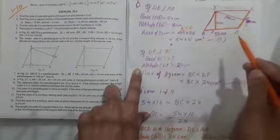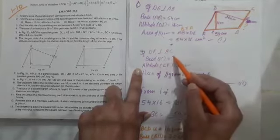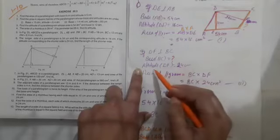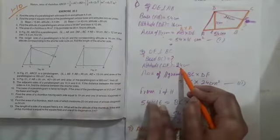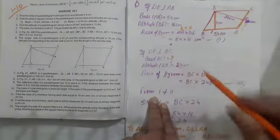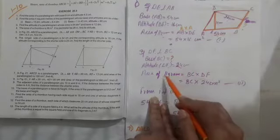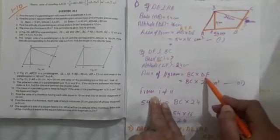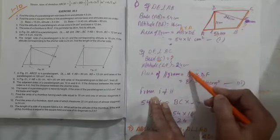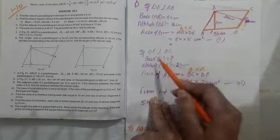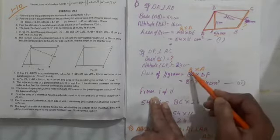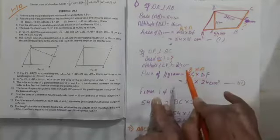Agar DF perpendicular hai BC pe, toh BC ho jayega base — woh nikalna hai. BC nikalna hai, it means base nikalna hai. Us parallelogram ka altitude kya hai DF, woh kitna hai 24 cm. Jab DF consider kar rahe hain perpendicular, tab us parallelogram ka base kya aayega — BC, aur altitude kya aayega — DF. BC ki value humne nikalni hai, DF kitna tha: 24 cm.